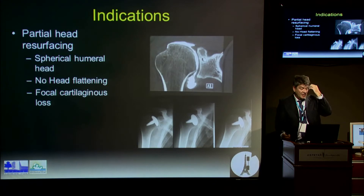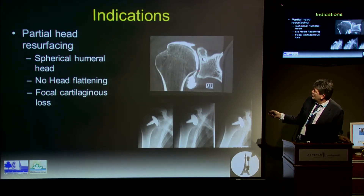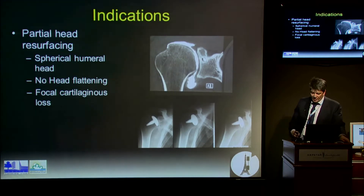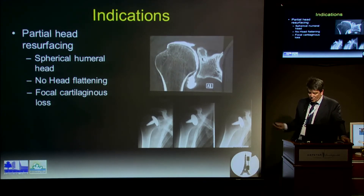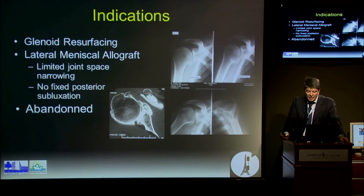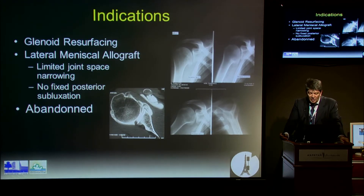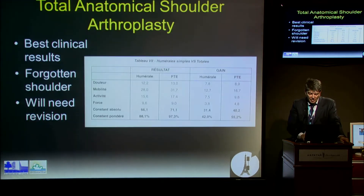Our current indications for biological resurfacing are patients with a really focal defect and normal cartilage on both sides — this might be an indication for a focal implant, though it's quite rare, and now some techniques can do this arthroscopically. For glenoid resurfacing, we no longer use meniscal allograft — we have totally abandoned that. Now, if we have to do something, we put an implant on the glenoid side.